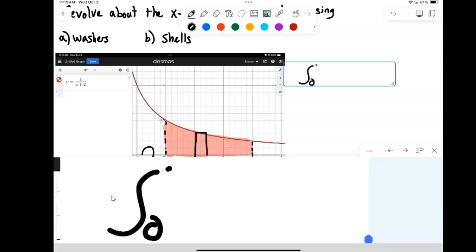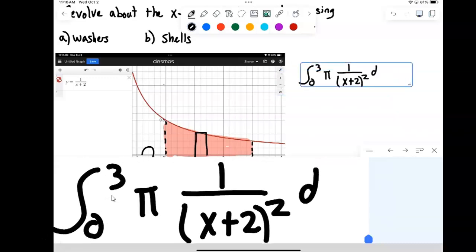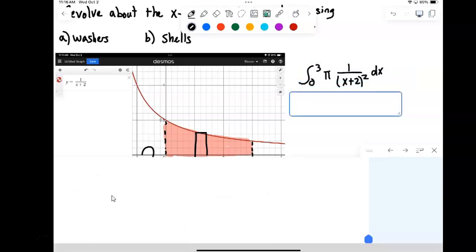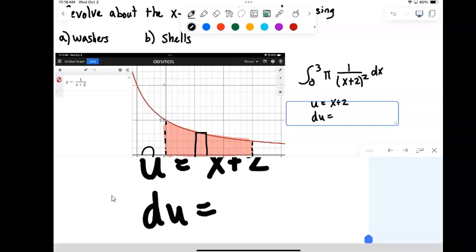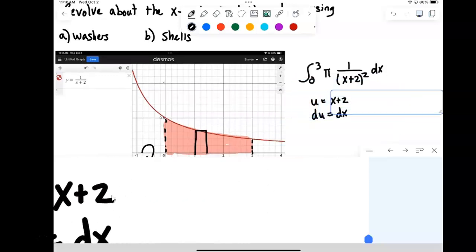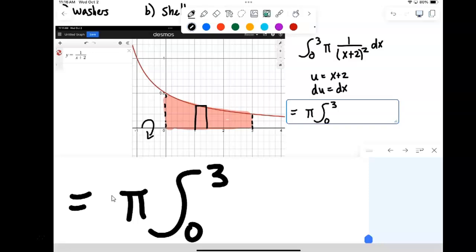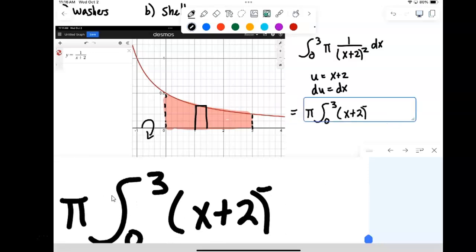So integral along the x from 0 to 3 of pi times the radius squared, which actually would result in 1 over x plus 2, quantity squared, dx. So this one's pretty straightforward. We can let u, since we have that quantity squared, let u be the inside. du will just call for dx. So we have everything we need to change it over to u. So that's going to actually be, when I write it here, the integral, pi on the outside, integral 0 to 3 of x plus 2 to the minus second, dx.